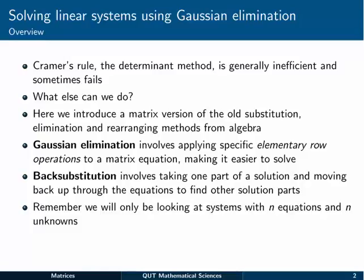In fact, sometimes it even fails to work at all. In this video we introduce a matrix version of what you might remember as the substitution, elimination, and rearranging methods from regular algebra, which you may have used on two equations with two unknowns, or maybe even three. Gaussian elimination involves applying specific elementary row operations to a matrix, and these are equivalent to those substitution, elimination, and rearranging ideas, making the matrix equation easier to solve.